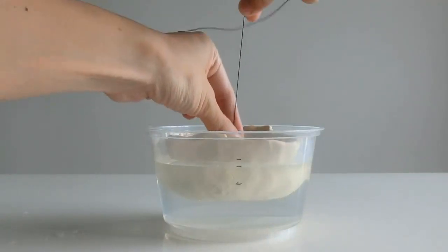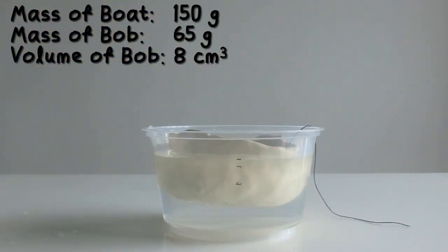Question. If the pendulum bob is taken out of the boat and dropped into the water, will the water level rise, fall, or remain unchanged?